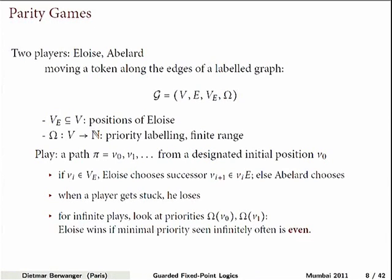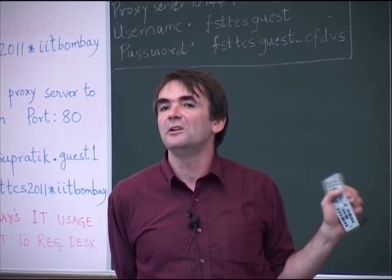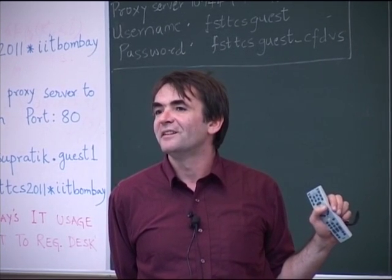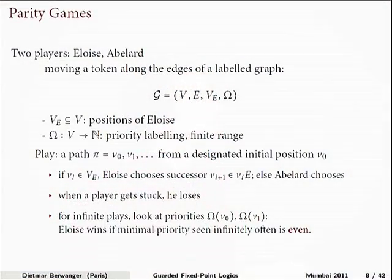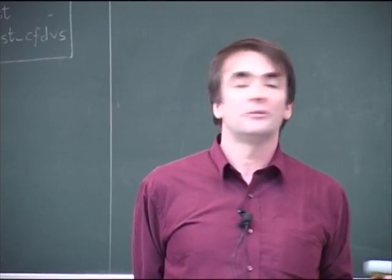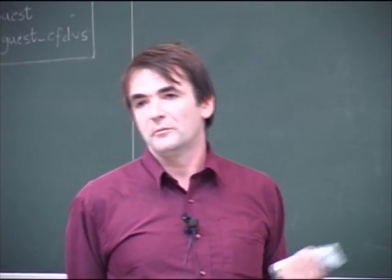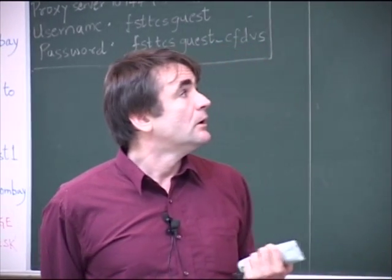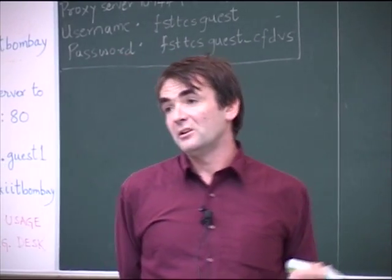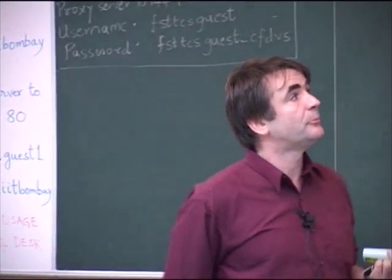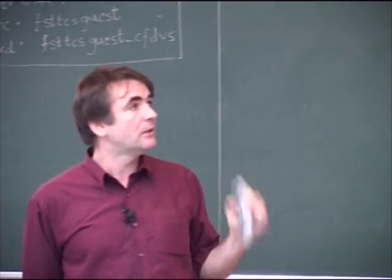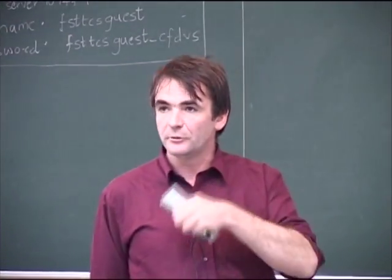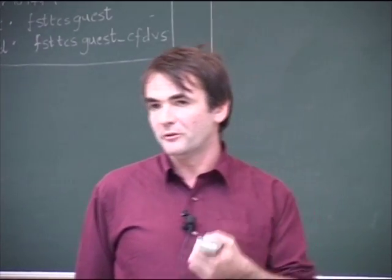Do I need to explain parity games? We have a directed graph and some of the nodes are marked as belonging to one of the players. We also have a labeling of nodes with numbers, and this labeling is important — it has finite range. The graph itself can be infinite, but I want this priority labeling to use only finitely many numbers.